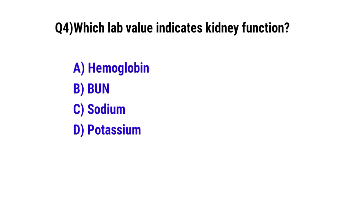Question number 4. Which lab value indicates kidney function? The correct option is B. BUN — blood urea nitrogen.